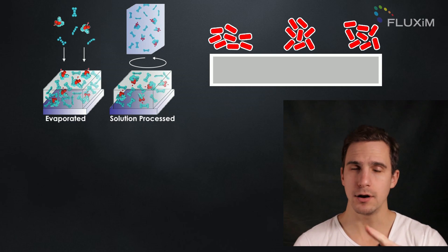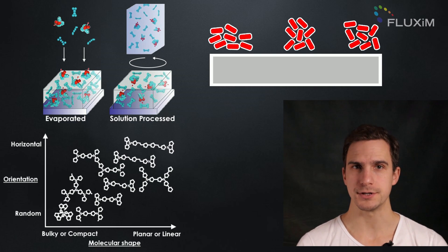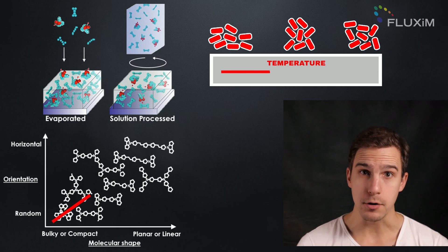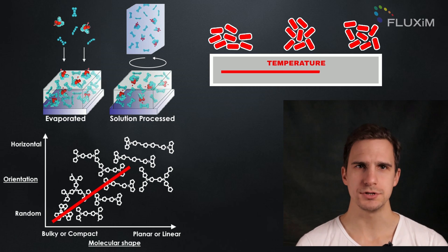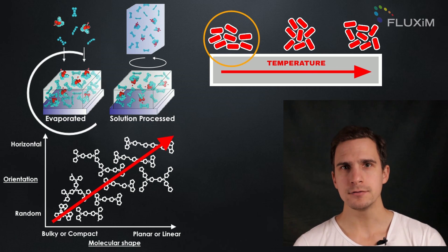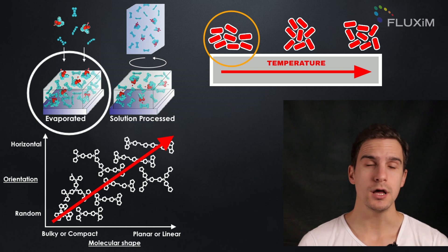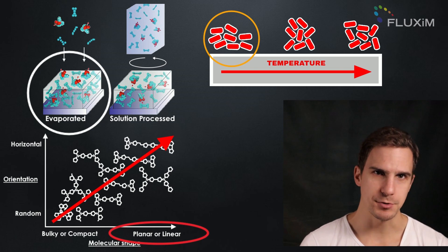But how can we control the orientation of the molecule and the forward dipoles? The temperature, deposition method, and molecular structure all influence the orientation. For a horizontal orientation, one should consider low deposition temperature, vacuum deposition over solution processing, and molecules with a high aspect ratio.